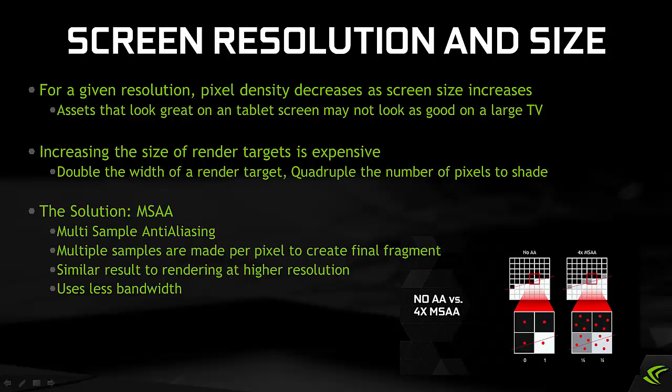Screen Resolution and Size. For a given resolution, pixel density decreases as screen size increases, meaning assets that look great on a tablet screen may not look as good on a large TV. Increasing the render target size to cope with this is prohibitively expensive — doubling the width quadruples the pixels to shade. The timely solution is multi-sample anti-aliasing, where multiple samples are made at each pixel location to create the final fragment, achieving a result similar to higher resolution rendering but at much lower bandwidth cost.